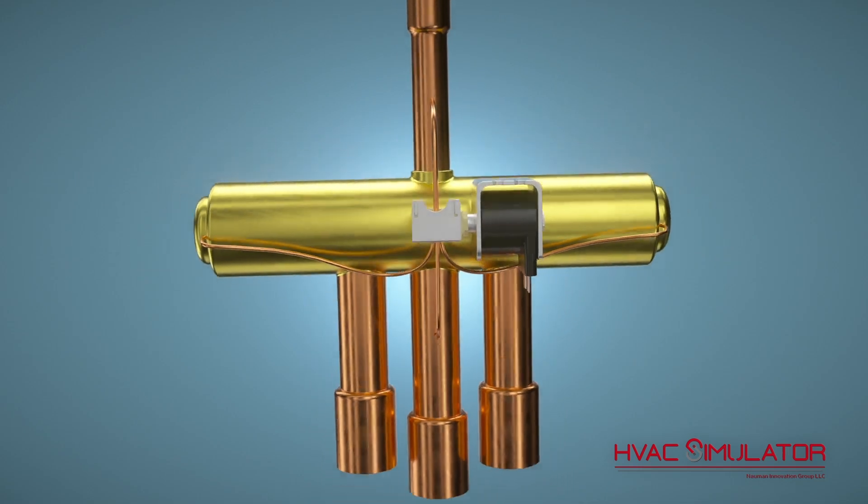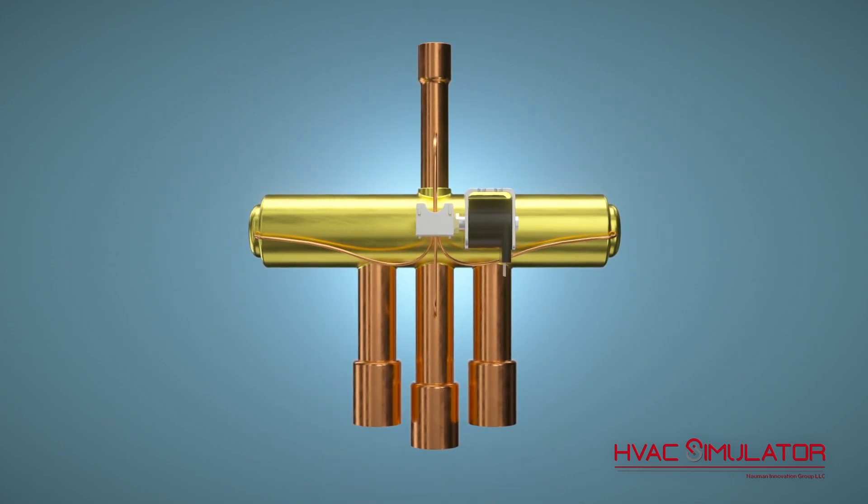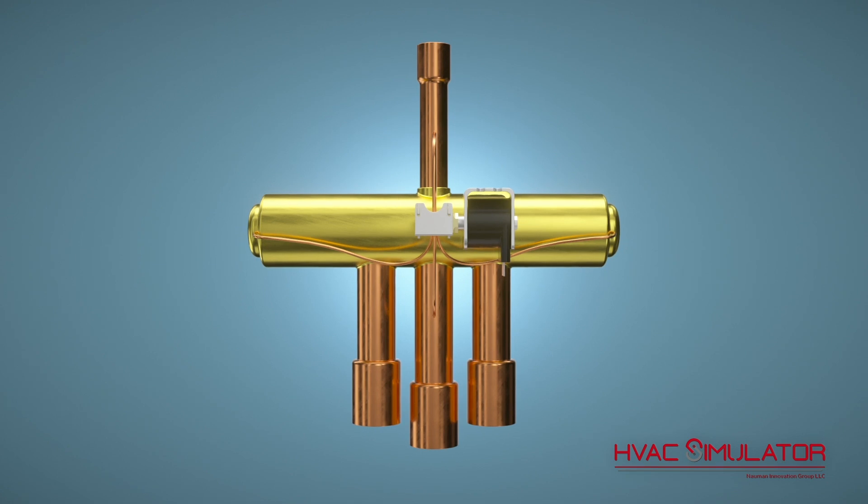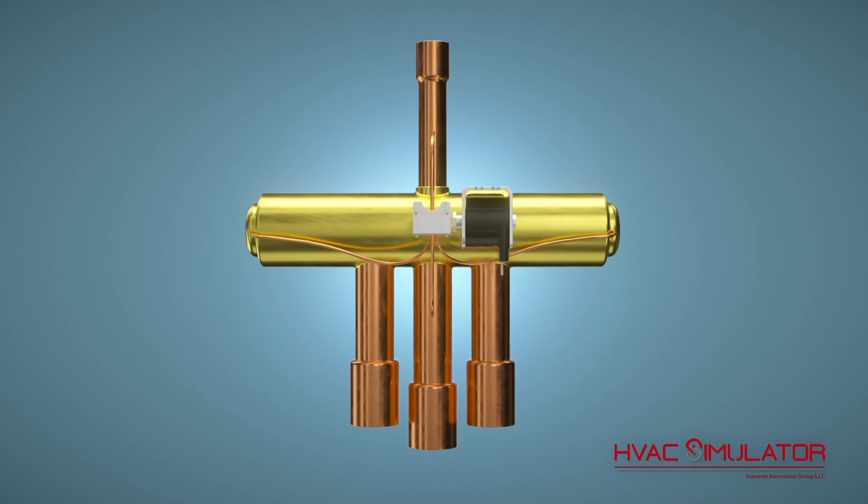The pilot valve and valve body both direct the flow of refrigerant. The pilot valve's mechanical movement is by electromagnetic force, whereas the movement in the valve body is by refrigerant pressure. Let's take a closer look.